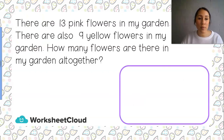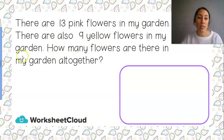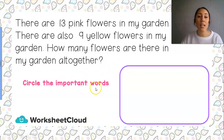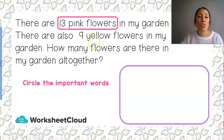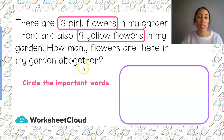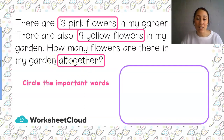Let's have a look at our first story sum. We're going to read through it together, and then follow some steps. There are 13 pink flowers in my garden. There are also 9 yellow flowers in my garden. How many flowers are there in my garden all together? Our first step is to circle the important words. 13 and pink flowers is important. Whenever we see numbers in our story sum, we know we're going to use those numbers. There are also 9 yellow flowers — that's our second important bit. The word 'all together' is one of our clue words, and all together means it is a plus sum.